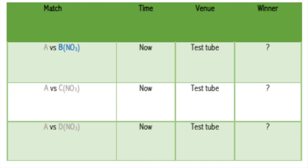So this is the fixture for the first round. In round one, we will react element A with the nitrate of B to see if element A will displace B from B nitrate, followed by element A being reacted with nitrate of C to see if element A will displace C from C nitrate. The final match in that group is element A being reacted with the nitrate of D to see if element A will displace D from D nitrate. These matches can take place back to back or simultaneously.